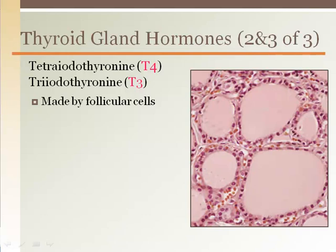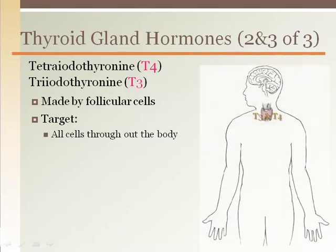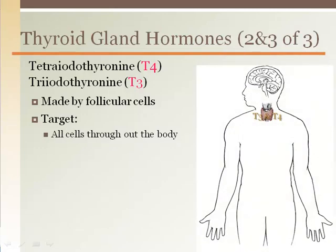These hormones are made by the follicular cells and stored in the many large follicular pools found within the thyroid gland. T3 and T4 from the follicular cells of the thyroid gland have an effect on all of the cells of the body. Their primary function is related to lipid and carbohydrate metabolism and the basal metabolic rate.